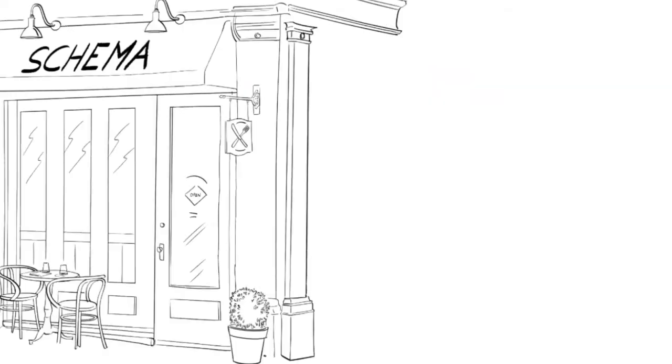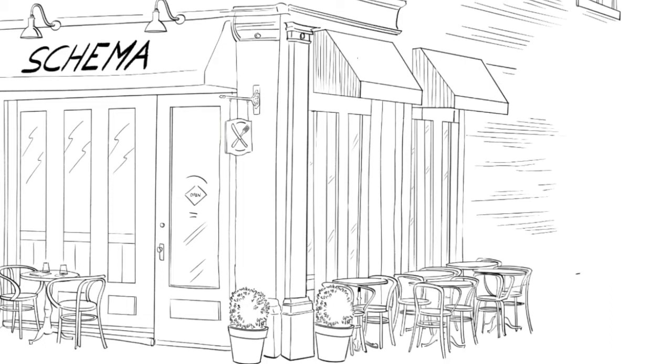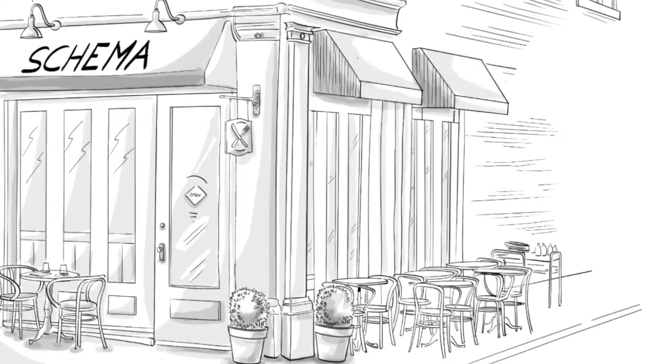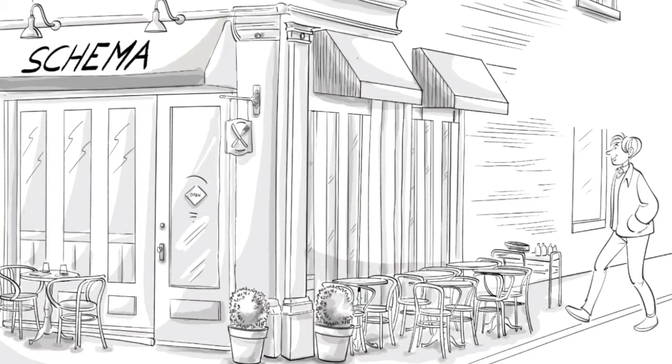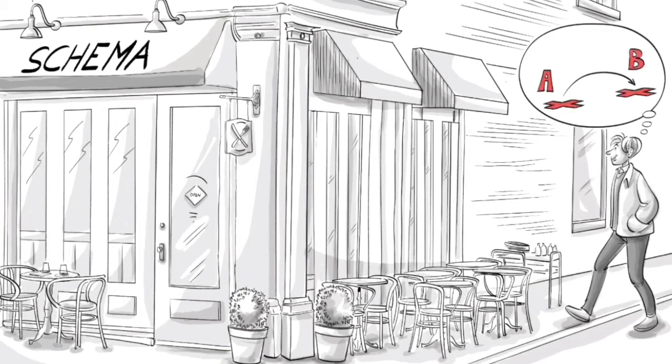Schema is a generalization of past experiences that forms a scripted pattern of thought. For example, we all have a specific process in mind when we think about going to a restaurant.